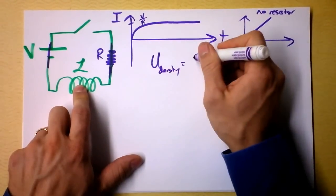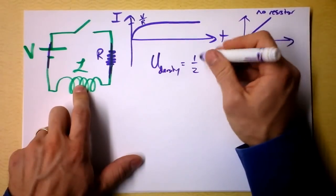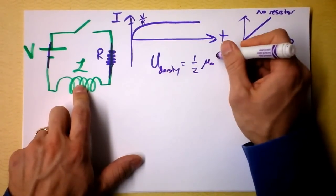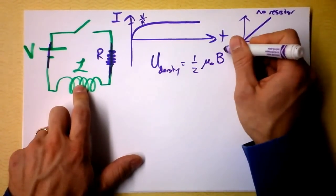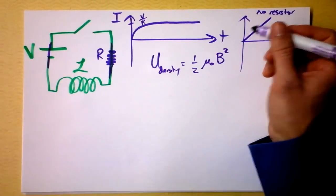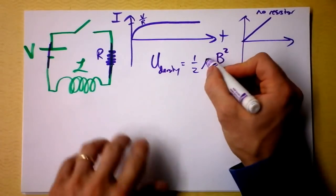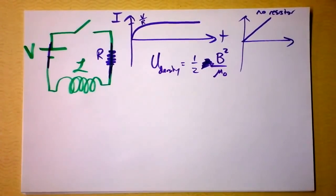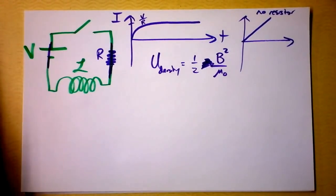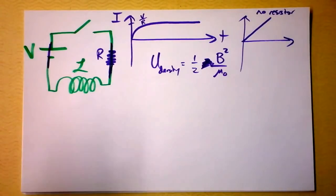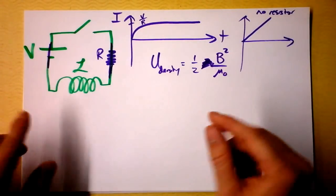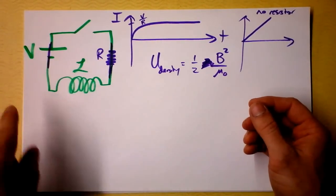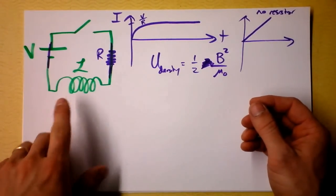The energy density in the inductor would be one-half times B² divided by mu-naught. Now, what if we hook up our inductor to an alternating source?